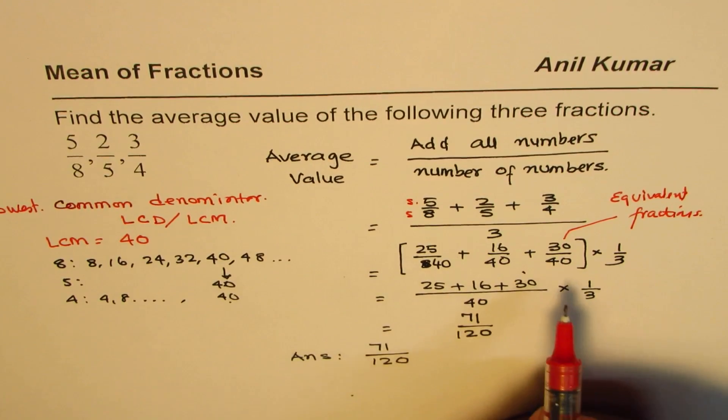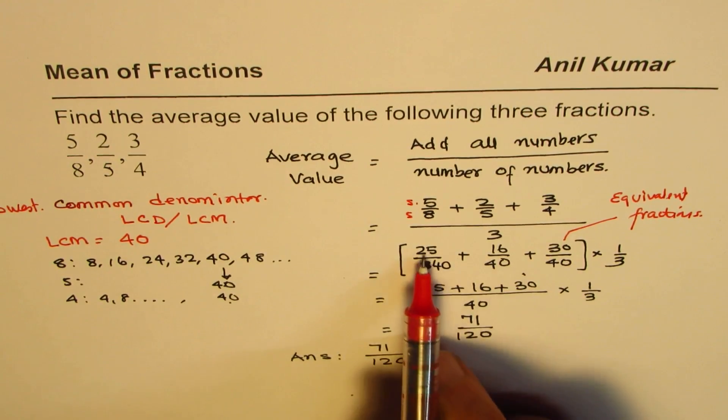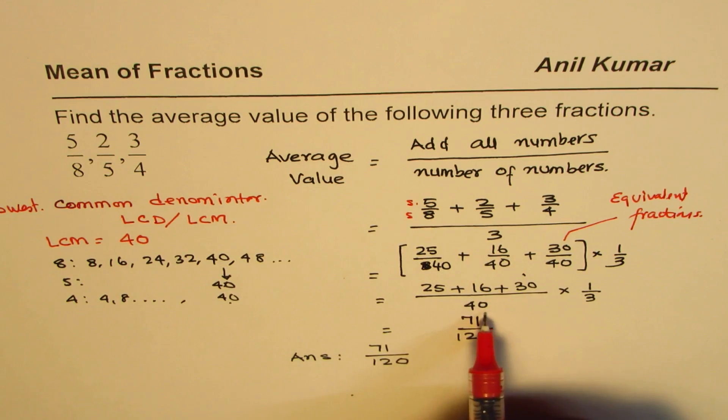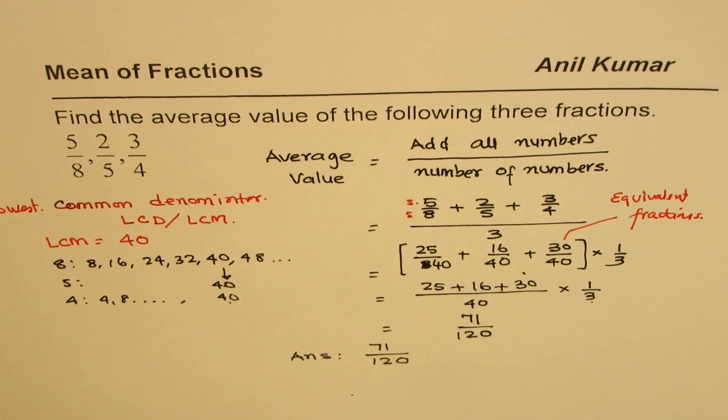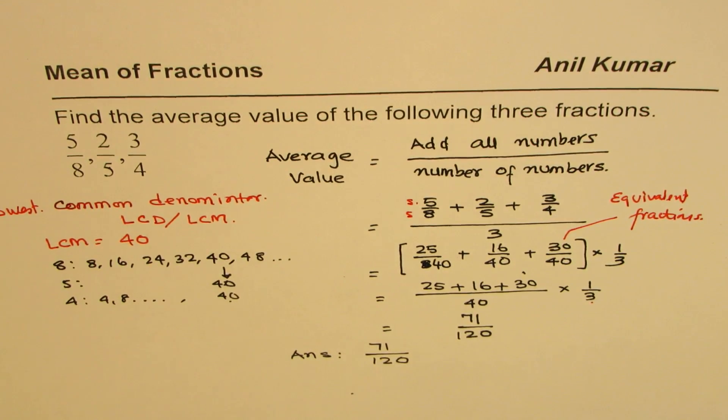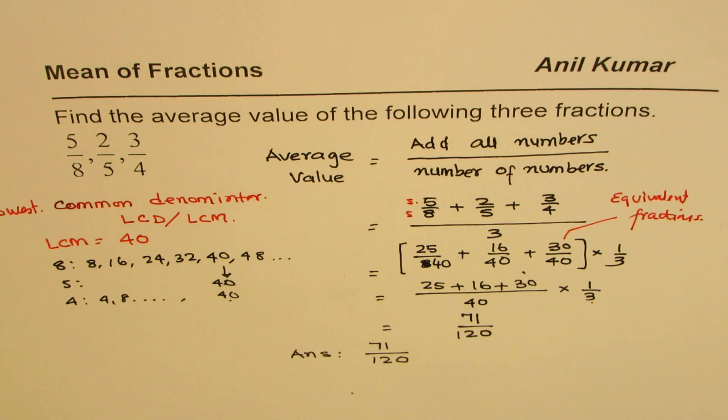Once you write as equivalent fractions with same denominator, you can just add the numerators and then divide the whole thing by three. That's what you get. I hope the steps are clear. I'm Anil Kumar, you are most welcome to share your question and I'll post the solutions at the earliest. Thank you and all the best.